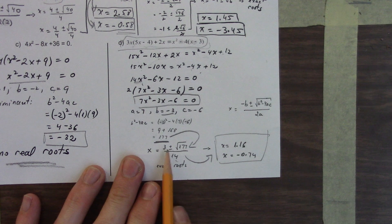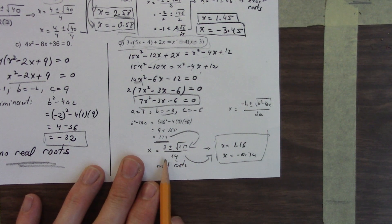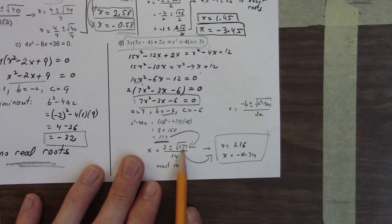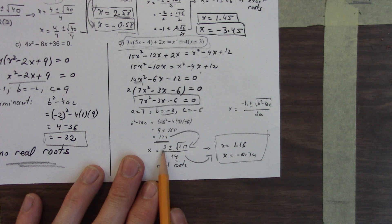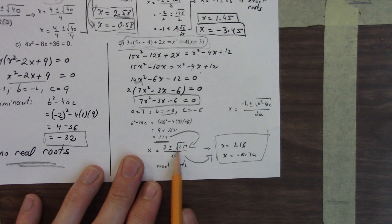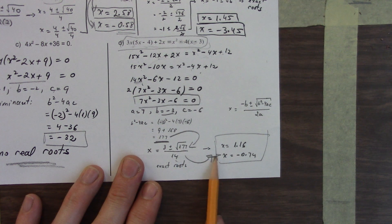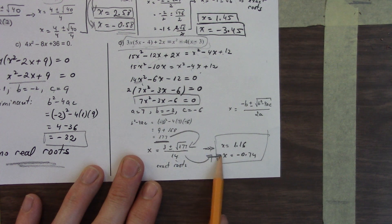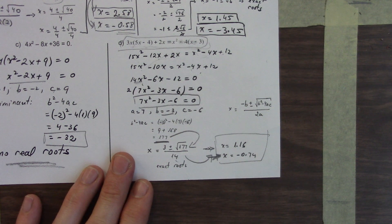Remember, you're going to do these. You're going to treat these as two separate equations. 3 plus root 171 divided by 14, and 3 minus root 71. Two equations give you two different answers for x.